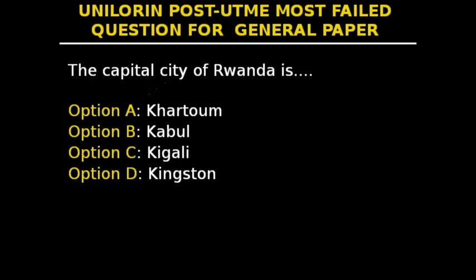This is question 23 of the most-failed university post-entry general paper series. The question says: the capital city of Rwanda is — option A: Kathmandu, option B: Kabul, option C: Kigali, option D: Kingston. Kigali is the capital and largest city of Rwanda, near the nation's geographical center. It has been Rwanda's economic, cultural, and transport hub since independence in 1962. The answer is option C — Kigali.